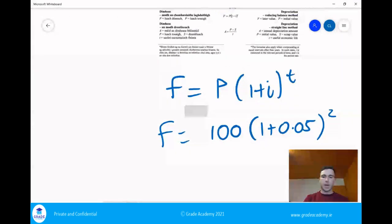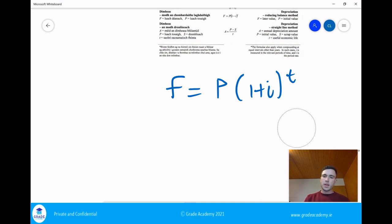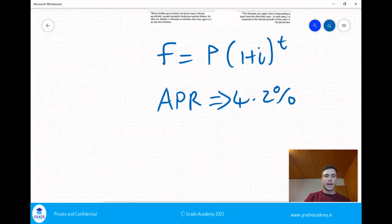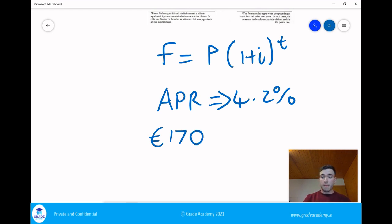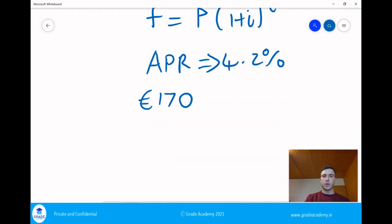Let's try and use this to figure out a question. Let's say we had an APR of 4.2% and we had 170 euro invested in our bank account. How much are we going to have after let's say five years?